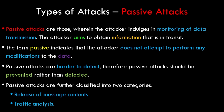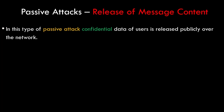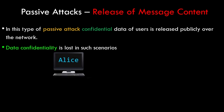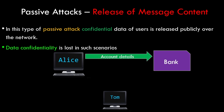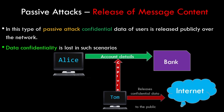In the release of message content passive attack, confidential data of users is released publicly over the network — in such cases, confidentiality is lost. In this example, Alice accesses her bank account services with her credentials. Meanwhile, Tom accesses her credentials and releases this confidential data over the network, so any other person on the network can also access Alice's account. This is an example of a passive attack associated with release of message content.